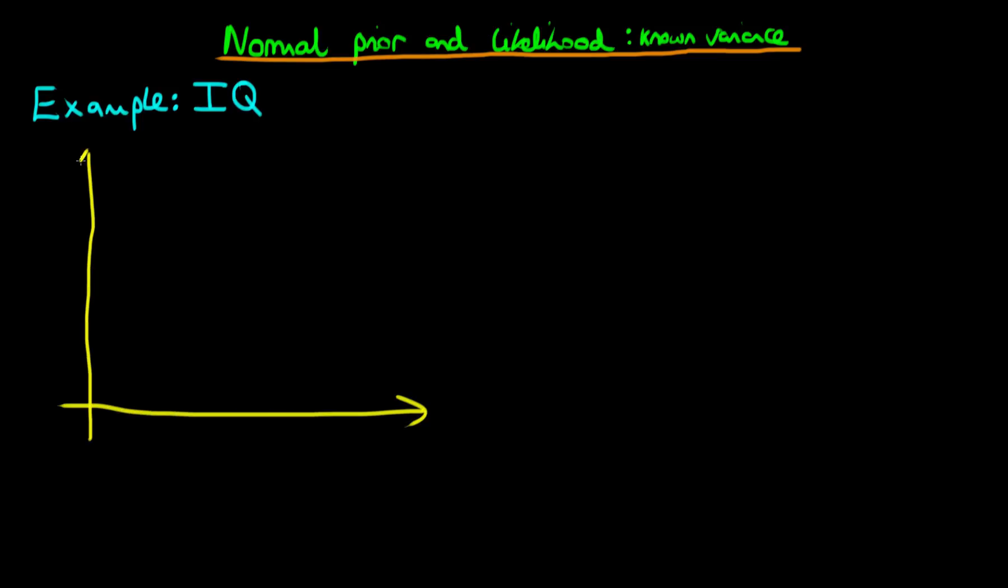We're going to assume that the professor thinks that the data generating process, in other words the likelihood, is normal about some population parameter theta with variance sigma x squared. And in this case, we're going to assume that the professor thinks from year to year the width of this distribution doesn't really change. So sigma x squared here is going to be known and fixed.